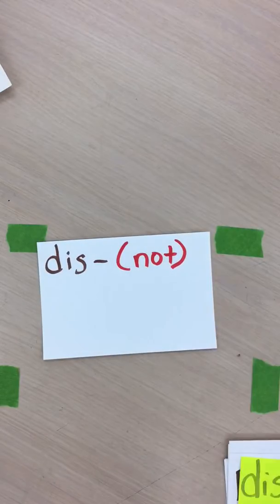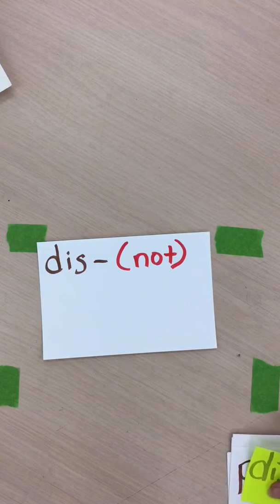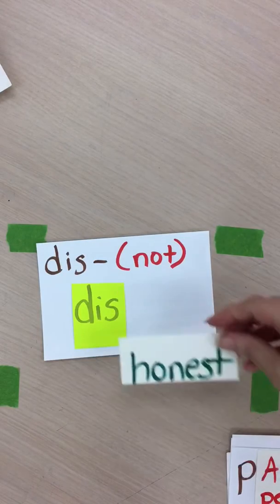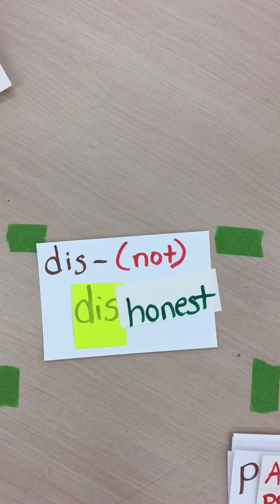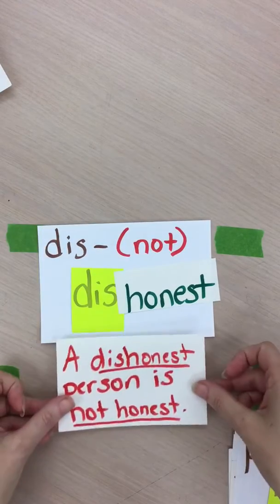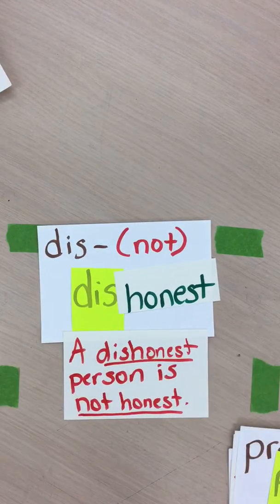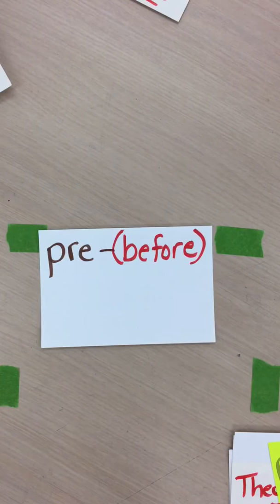Next we have dis. The prefix dis means not. Let's add the prefix dis to the word honest — here we have the word dishonest. What do you think dishonest means? A dishonest person is not honest.